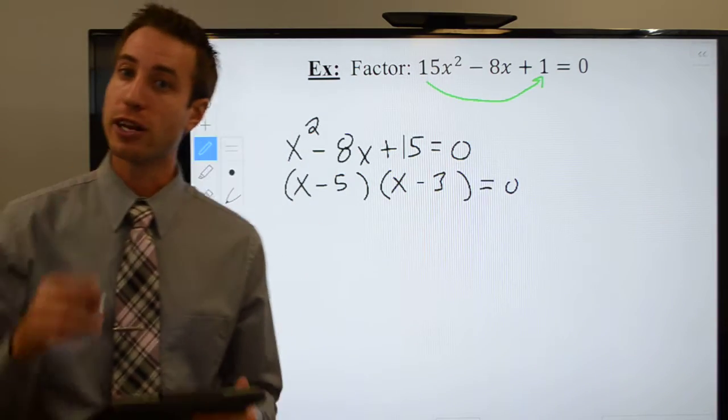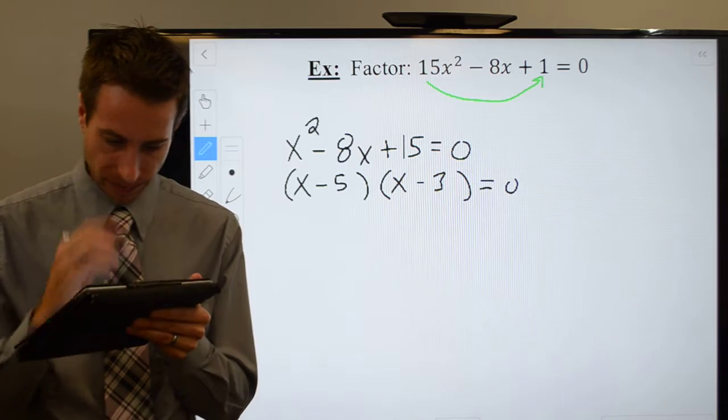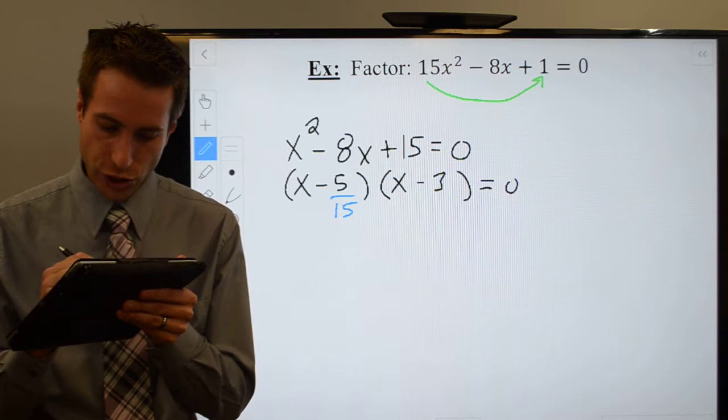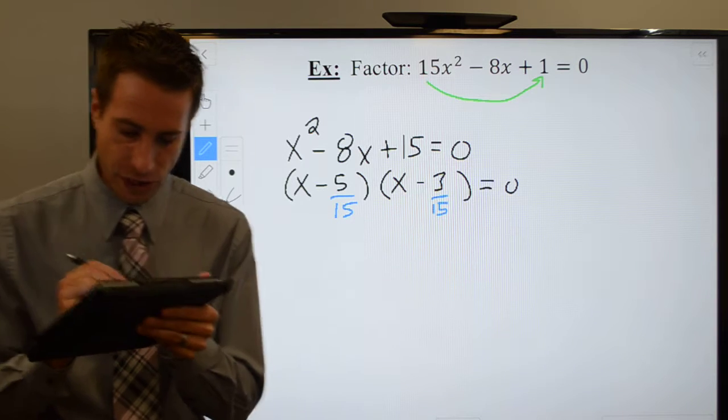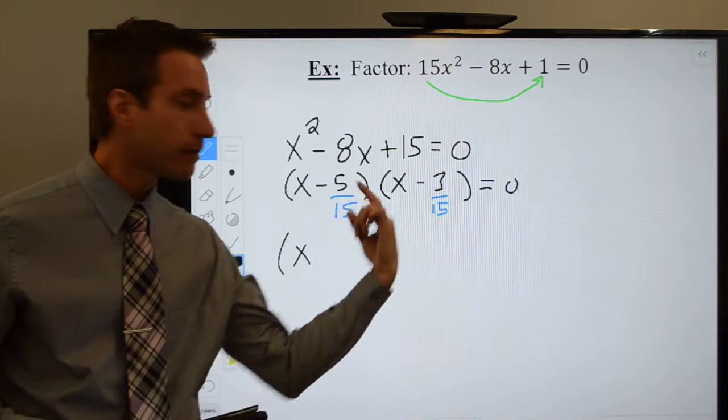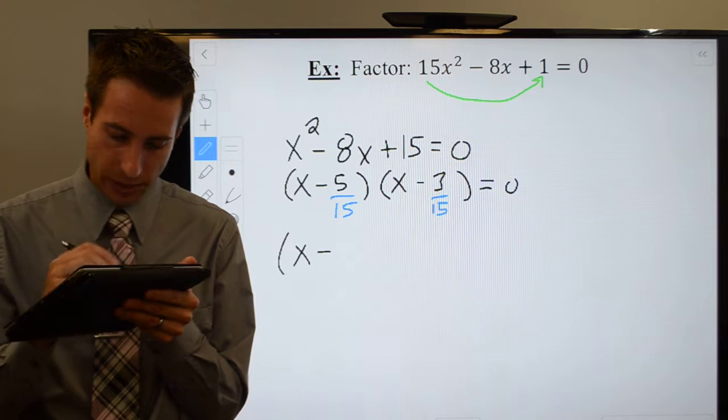But then you've got to do the divide part of the slide and divide method. So we will divide by the original leading coefficient and go ahead and simplify. I can reduce each of those by a 5, so that's going to leave me with, let's see, 1 third.